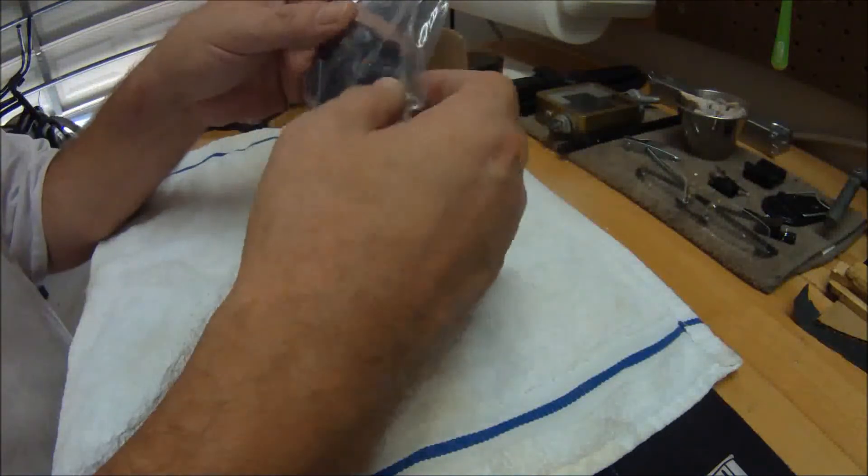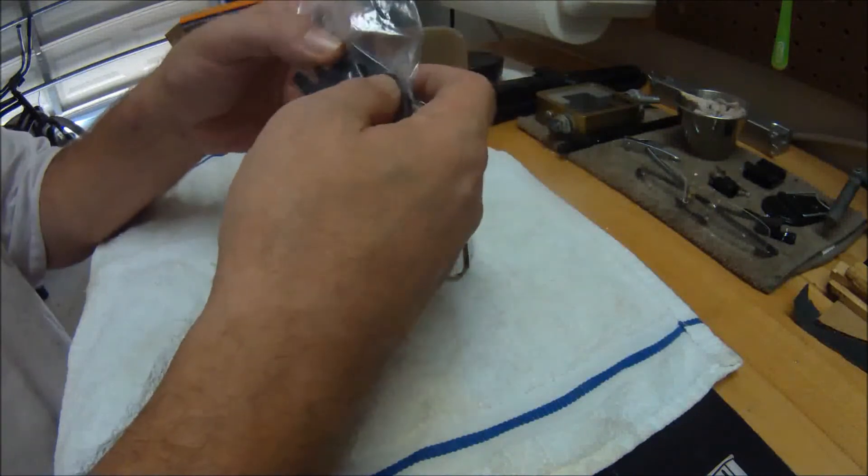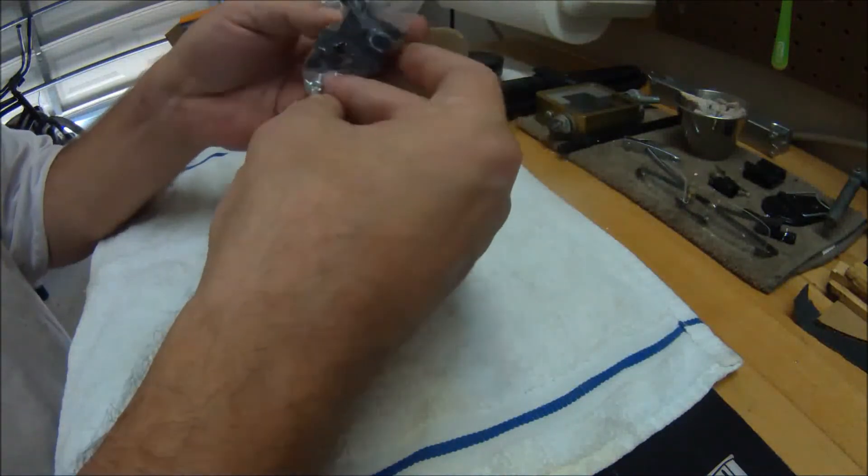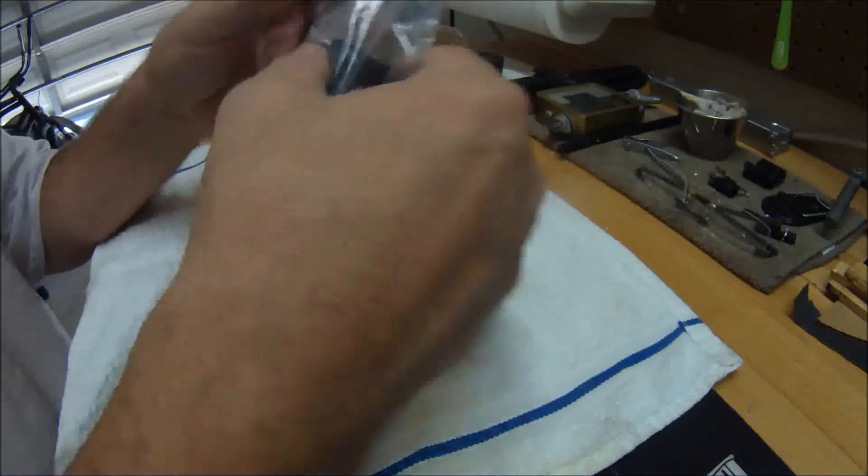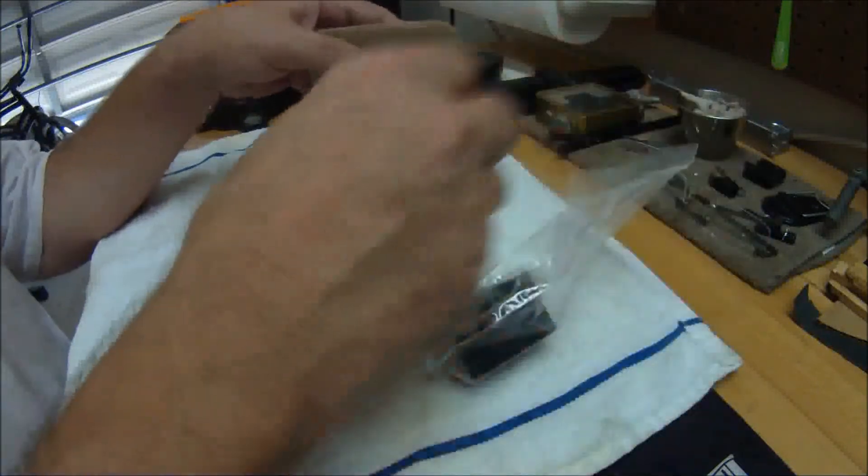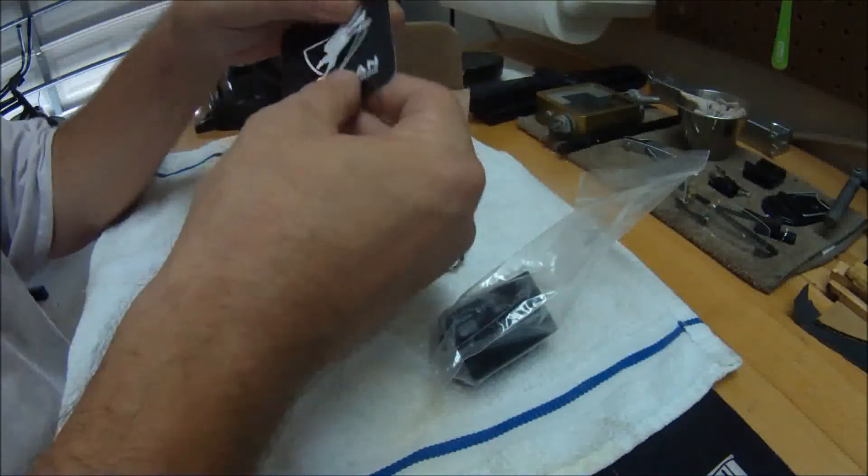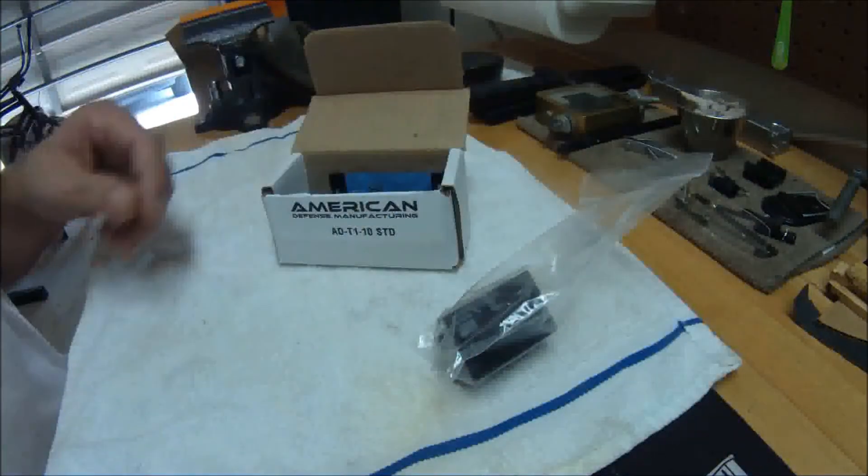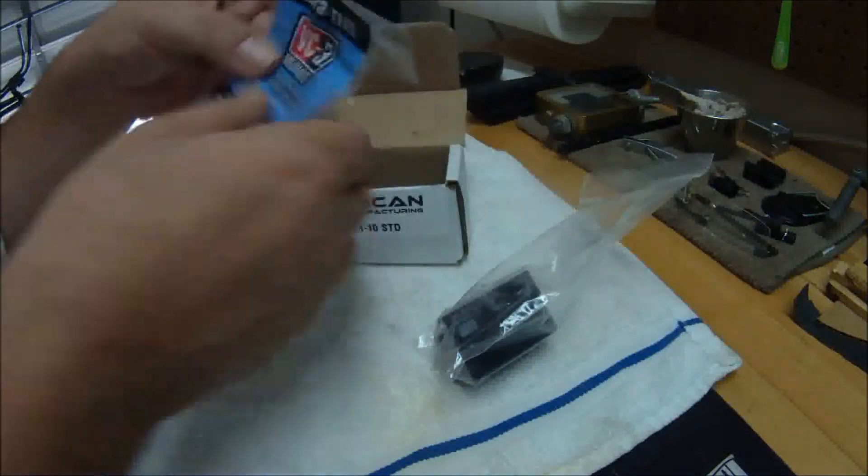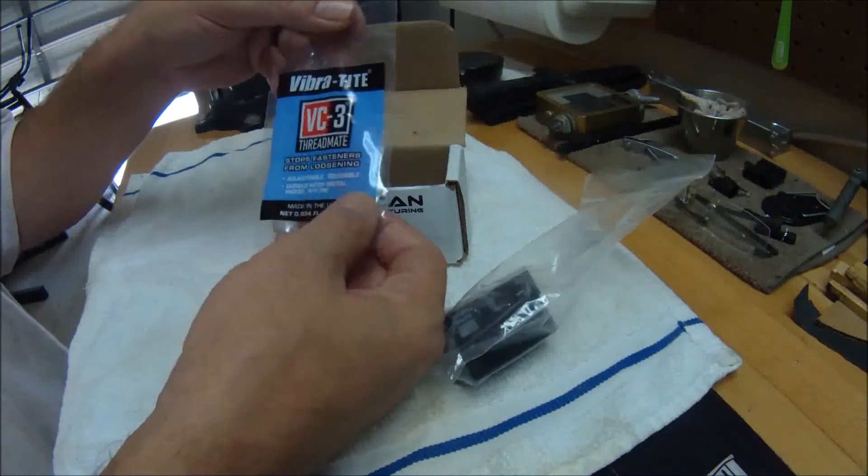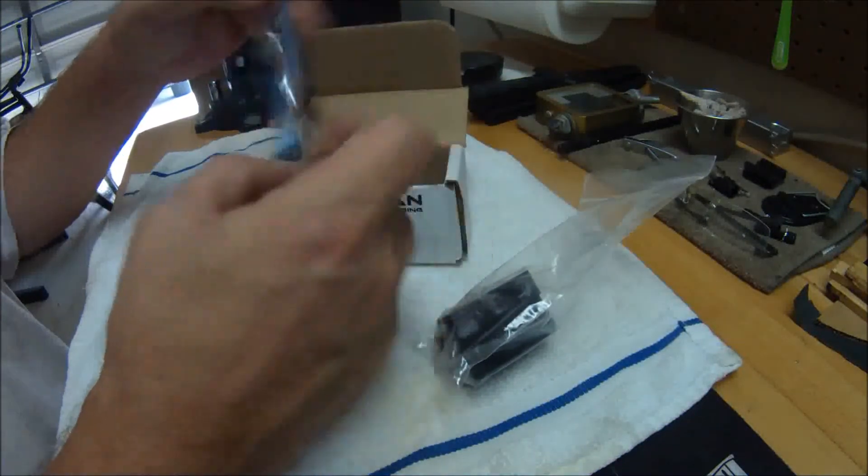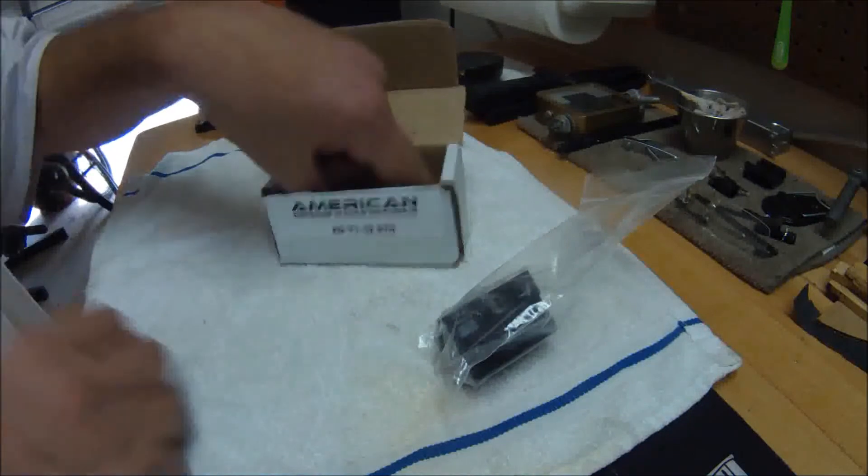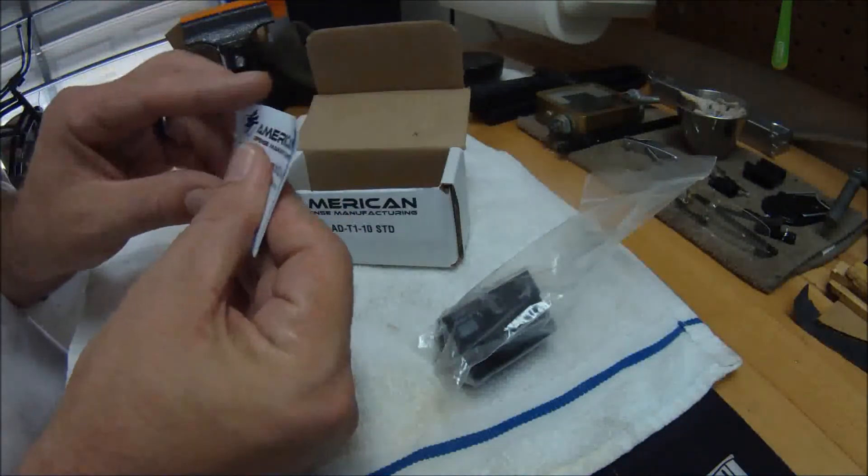Got a Ziploc baggie with the mount, wrench, some additional mounting screws. I'll set that right here for a second. Decal, a little bent up, but decal. Some Vibra-Tite. Basically this is a thread-locking compound. And an instruction sheet.